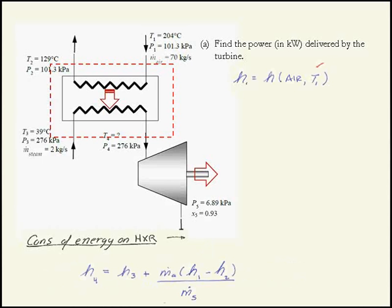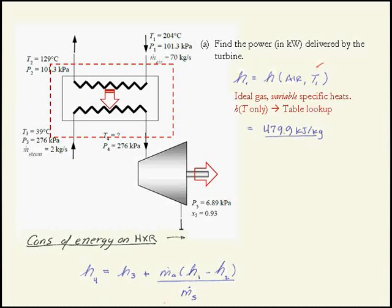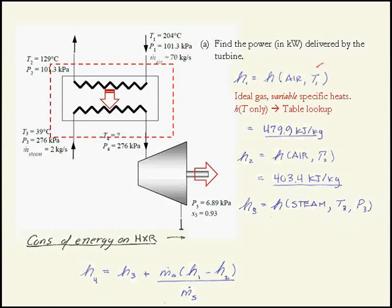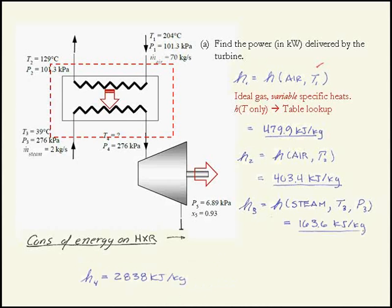In this problem, we're treating air as an ideal gas with variable specific heats. So this is no longer simply Cp delta T. I have to look up H in a table — essentially a table of integrals for the integral of Cp dT from some reference temperature to a temperature of interest. I look that up and find it's 479.9. H3 is known because we have two properties going to steam, also a table lookup from completely different tables. And I can finally find H at state point 4.